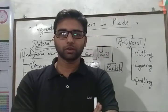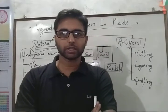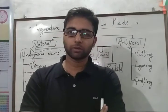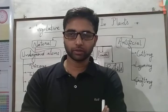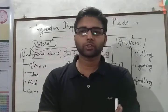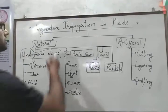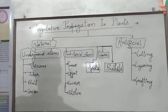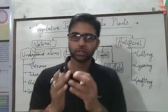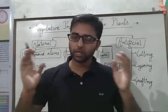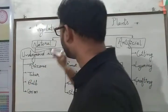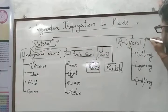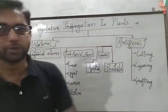Hello dear students, welcome in this second part of the first chapter. We are discussing about asexual reproduction. The next type of asexual reproduction is vegetative propagation in plants, also called vegetative reproduction in plants. Vegetative propagation or vegetative reproduction is broadly classified into two types: natural type of vegetative propagation and artificial type of vegetative propagation.